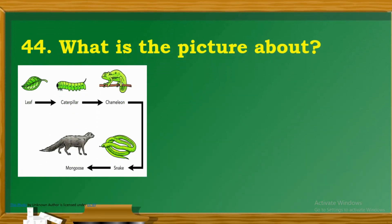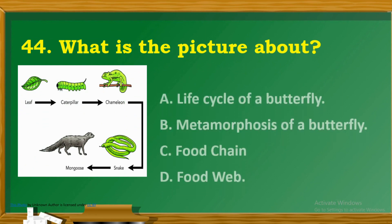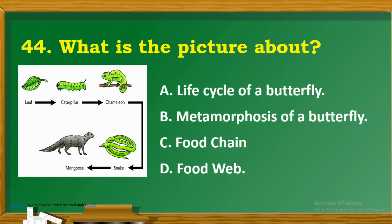Question 44: What is the picture about? A. Life cycle of a butterfly. B. Metamorphosis of a butterfly. C. Food chain. D. Food web.